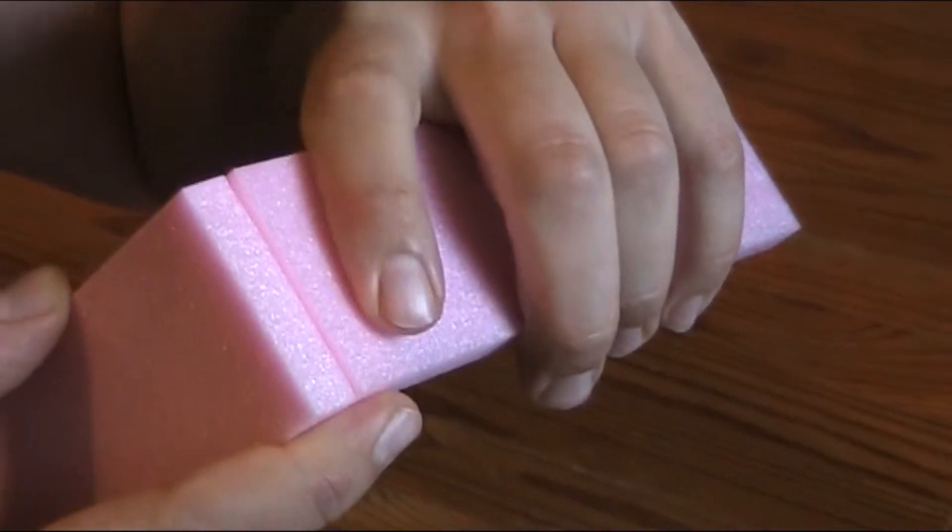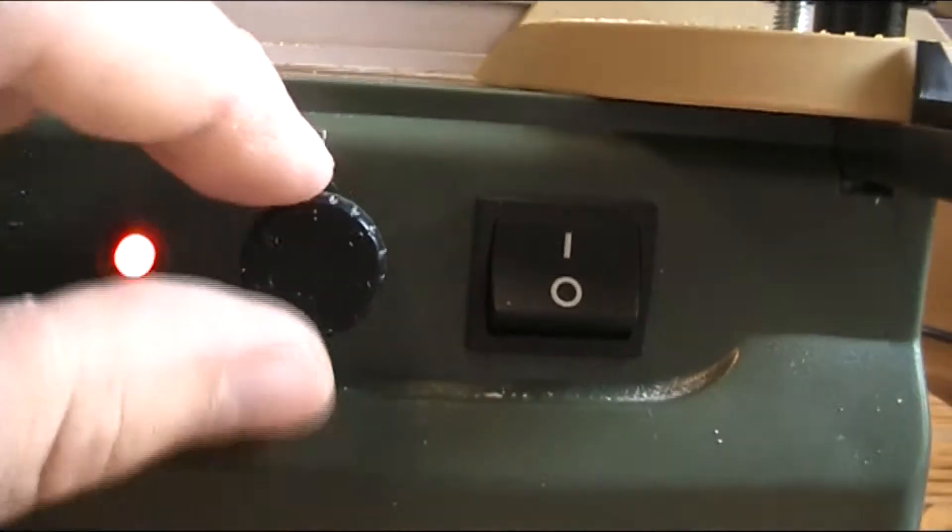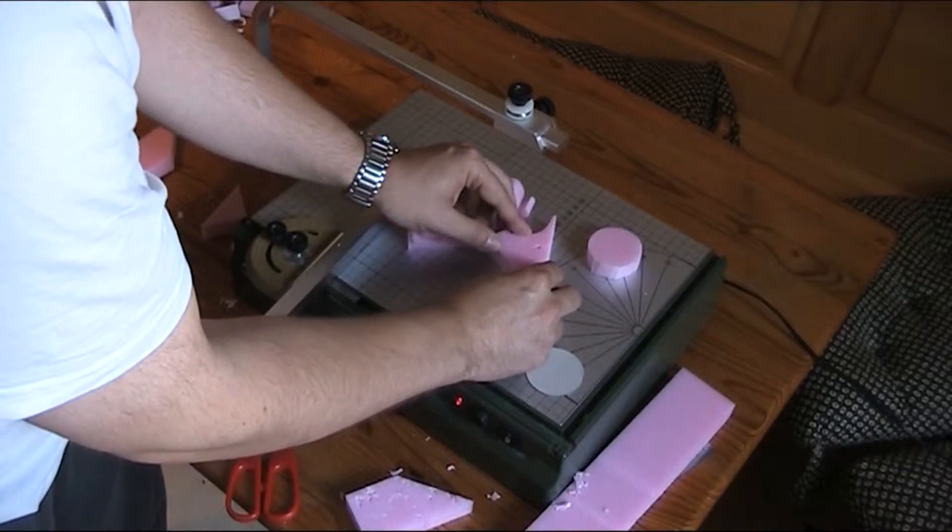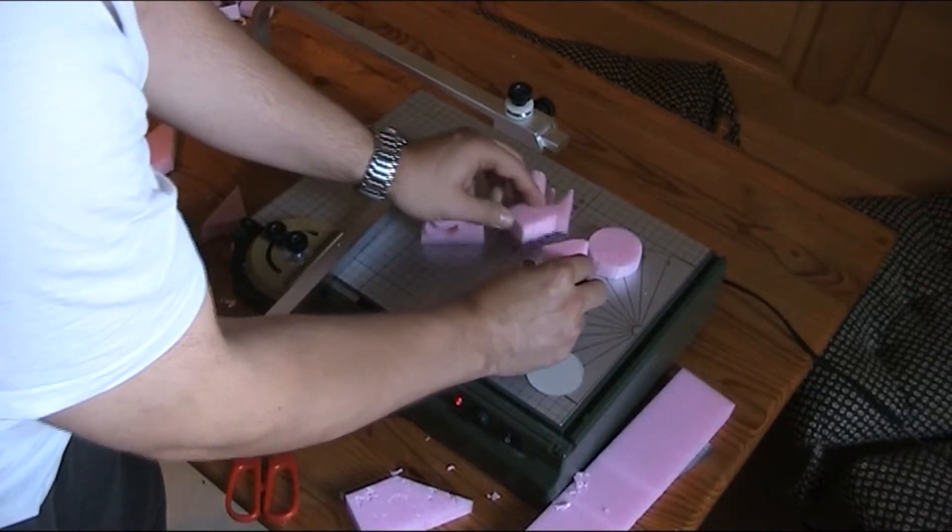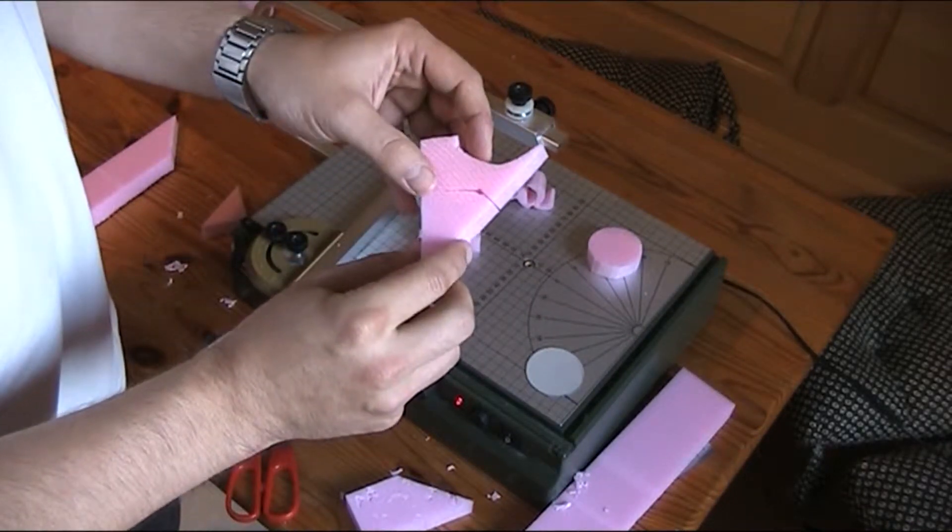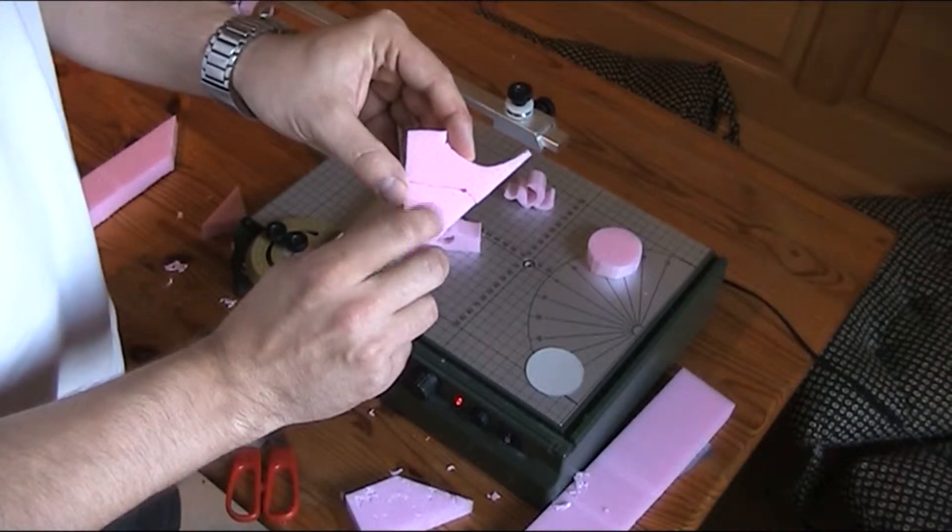When you turn on your hotwire cutter, you can adjust the temperature of the wire. The temperature really depends on the material you use. If the wire is too hot and you're not moving fast enough, you'll see it because it will melt your material away.